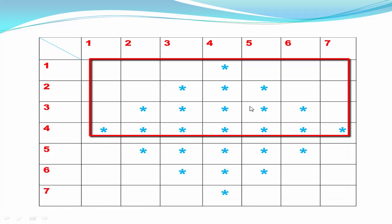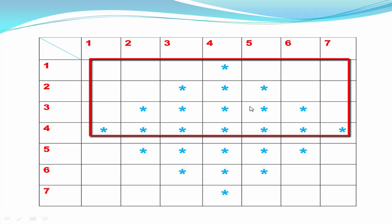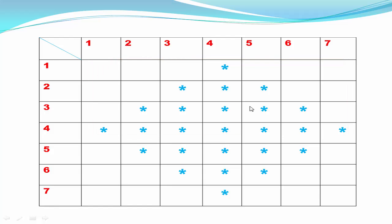First we print the upper portion. We have already done this in our previous tutorial, so I won't go into full details. In short, we need three loops — one for rows. We write: for row equal to one, row less than or equal to the maximum number of rows. For the upper portion, maximum number of rows is four, so the termination condition is row less than or equal to four, then increment row by one.